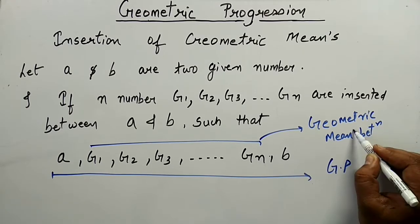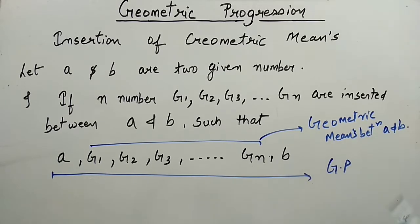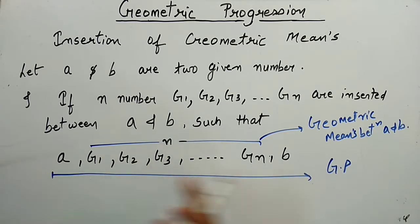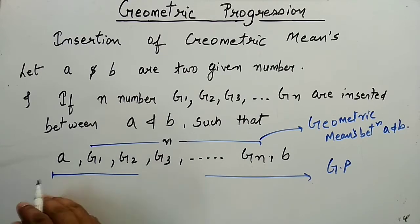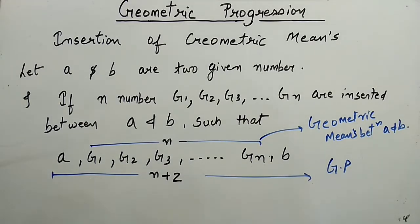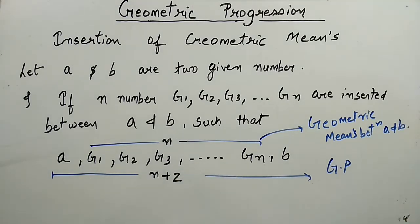If you have inserted n geometric means between a and b, then the total number of terms in this sequence would be equal to n plus 2. So g1, g2, g3 up to gn will be the geometric means between a and b.